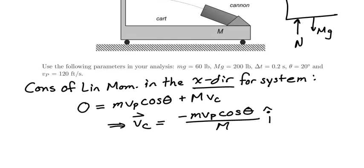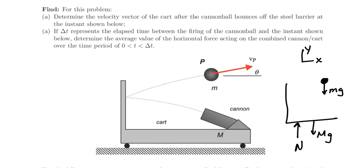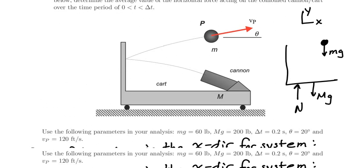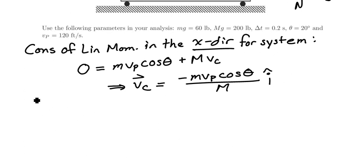Now the second thing we're asked here is to find actually the average horizontal force acting on the combined cannon cart system over the given instant. And if that's the case, all I'm going to do to figure that out is to find the conservation of linear momentum in the x direction.